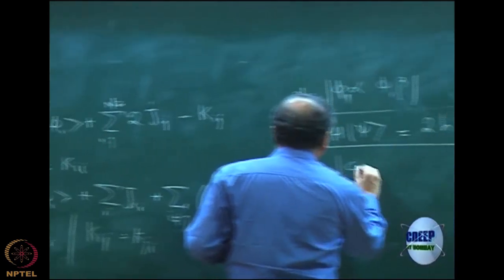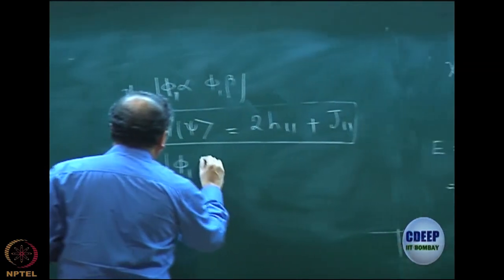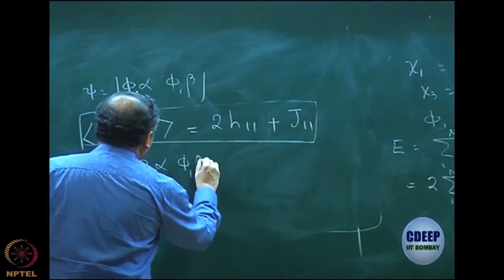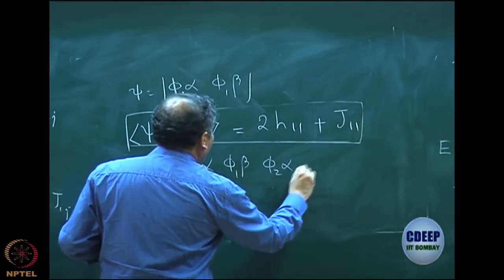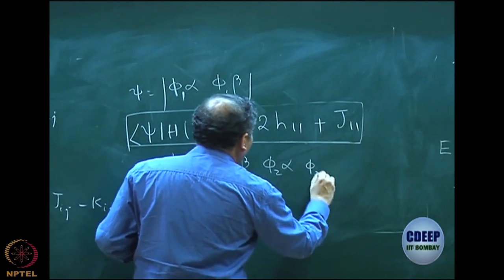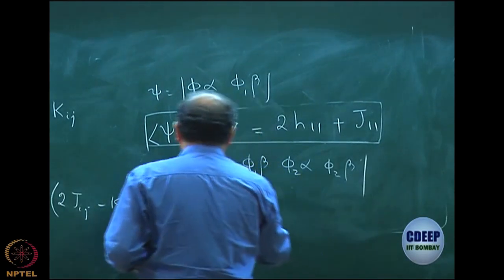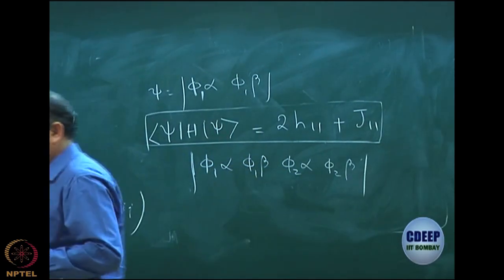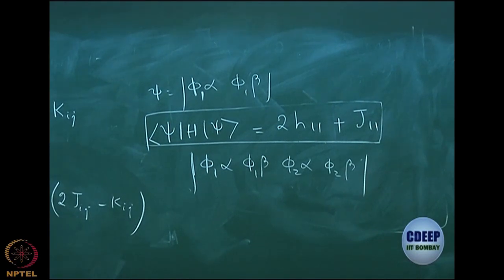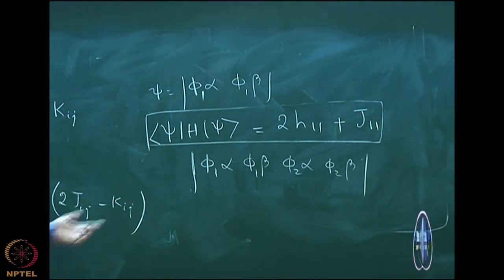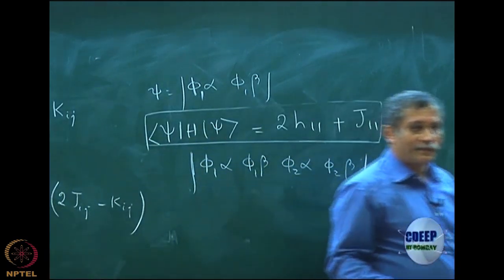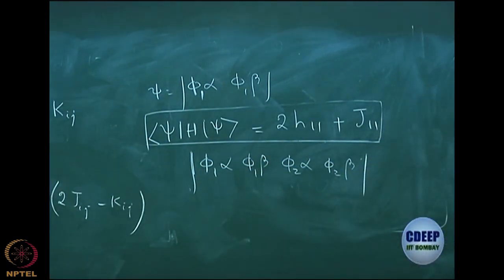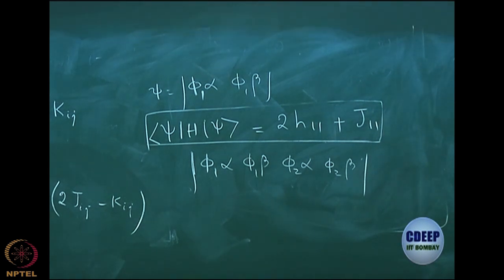Let us take another determinant: phi_1 alpha, phi_1 beta, phi_2 alpha, phi_2 beta. This could be the beryllium atom — 4 electrons. Phi_1 is 1s and phi_2 is so-called 2s, whatever it is. This is not hydrogenic 1s or 2s; we will find that out. But given phi_1 and phi_2, you can now apply the same form.